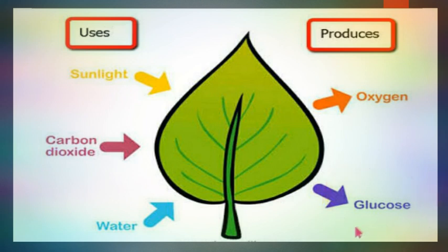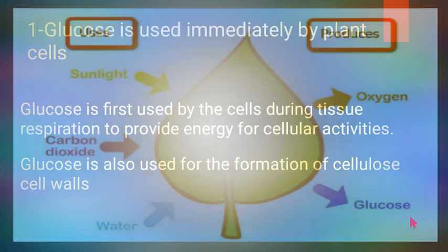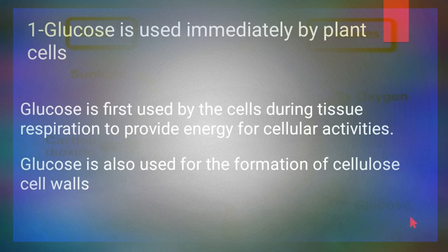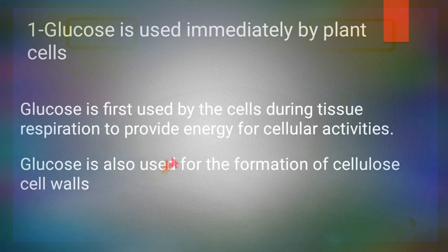Today's video is mostly about what this glucose is used for in plants. The first use of glucose is that it is used immediately by plant cells as a substrate — it is oxidized and provides energy for cellular activities. Glucose is also used for the formation of cellulose cell walls.